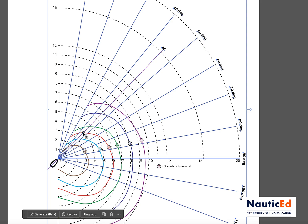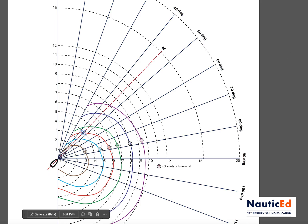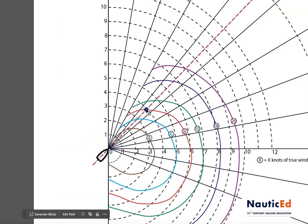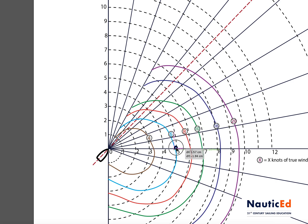At a 45-degree angle to the true wind, we can read how fast the theoretical boat speed should be. We follow the concentric circle around and it's slightly less than four knots — about 3.8 knots. Now if we zoom in and say the boat was actually doing 60 degrees off the wind with a wind speed of 8 knots, then the boat speed would be about five knots.